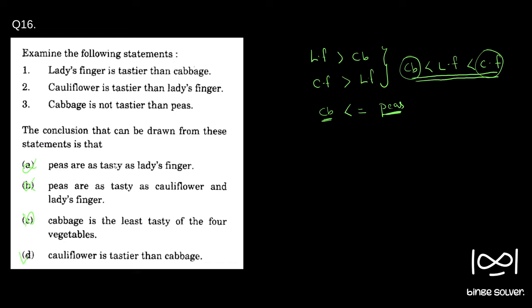Cauliflower is tastier than cabbage — from the statements we can clearly see this, so D is the correct option. The most likely mistake a student may make in the exam hall is missing out the equal sign. If you write cabbage is strictly less than peas, then option C — cabbage is the least tasty of the four — would seem true. So be careful: when 'not tastier' is given, don't forget there can be an equal sign, meaning cabbage and peas may taste similar. Solution to question 16 is D: cauliflower is tastier than cabbage.